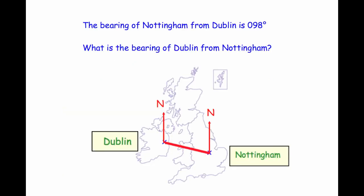Let's go back to our question. The bearing of Nottingham from Dublin is 98 degrees. Here we've got Dublin with its north line, and the bearing of Nottingham from Dublin is 98 degrees — the angle from the north line round to the line joining them. The question asks: what is the bearing of Dublin from Nottingham? We want to work out the angle clockwise from north, all the way around to the line at Nottingham.